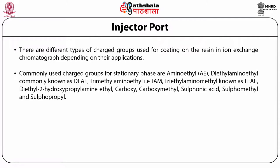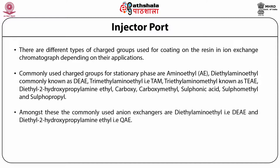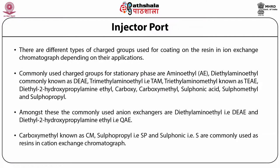The column in ion exchange chromatography is packed with resins or matrix coated with charged groups depending on the type of separation required. The commonly used charged groups for the stationary phase are amino ethyl, diethyl amino ethyl (DEAE), trimethyl amino ethyl (TAM), triethyl amino ethyl (TEAE), diethyl 2-hydroxypropyl amine ethyl, carboxymethyl, sulfonic groups, sulfo-methyl groups and sulfo-propyl groups. The very commonly used anion exchangers are DEAE and QAE, while carboxymethyl (CM), sulfo-propyl (SP) and sulfonic functional (S) are the commonly used cation exchangers.